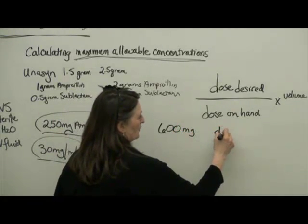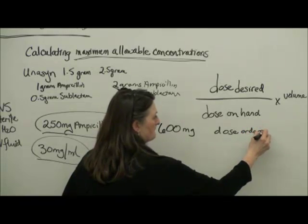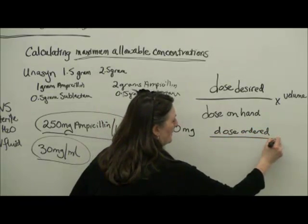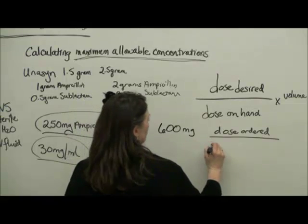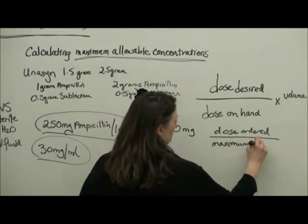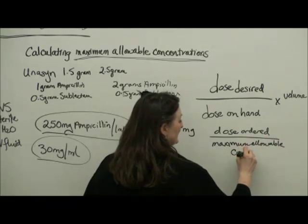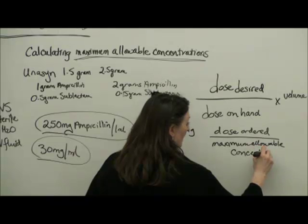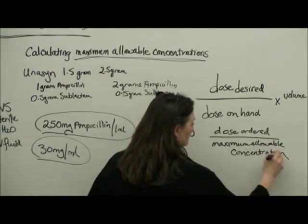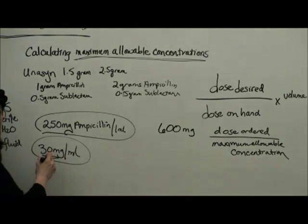So dose ordered divided by the maximum allowable concentration, which is listed in your med reference and on LMR, which in this case it must be 30 mg per mL.